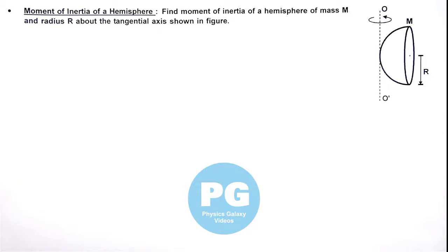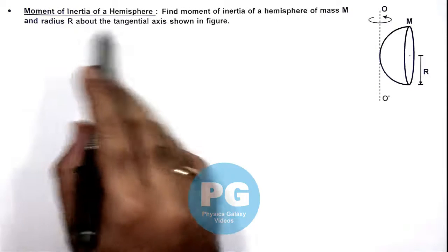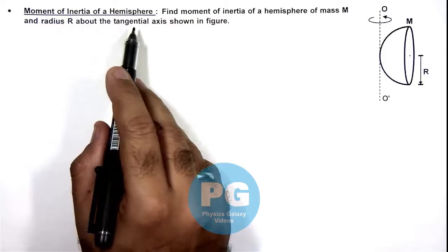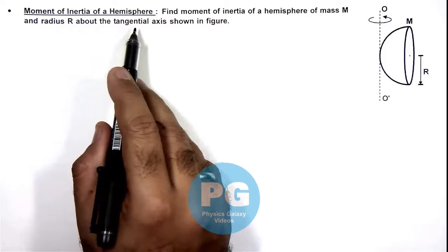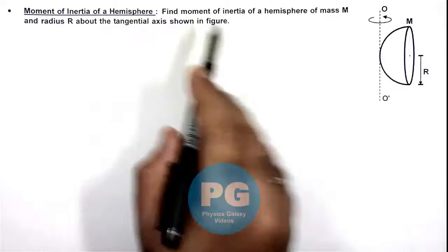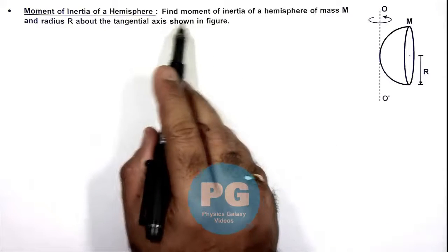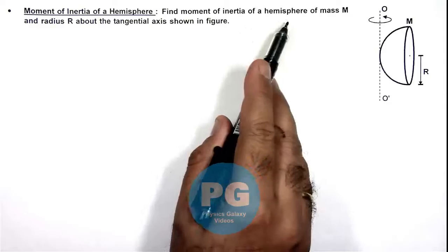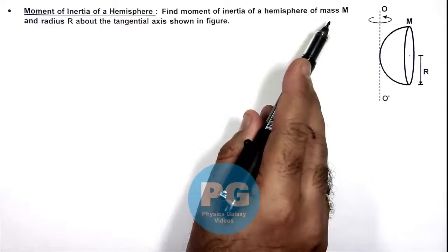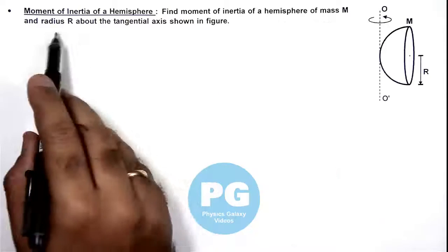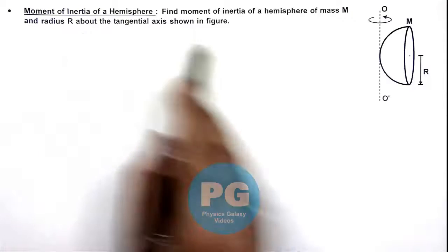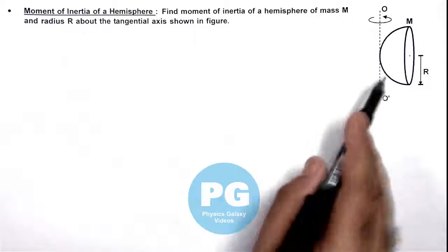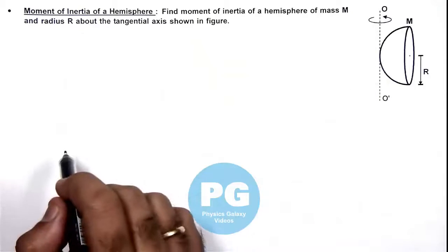In this illustration, we'll calculate the moment of inertia of a hemisphere. We are required to find the moment of inertia of a hemisphere of mass m and radius r about the tangential axis shown in the figure.